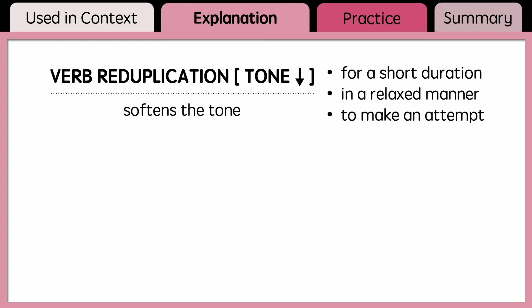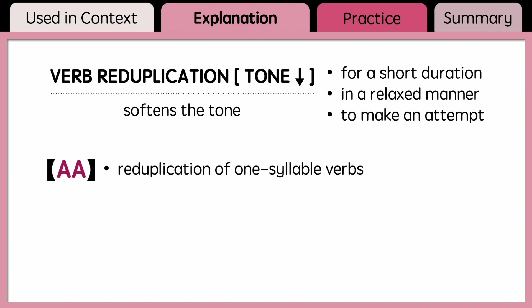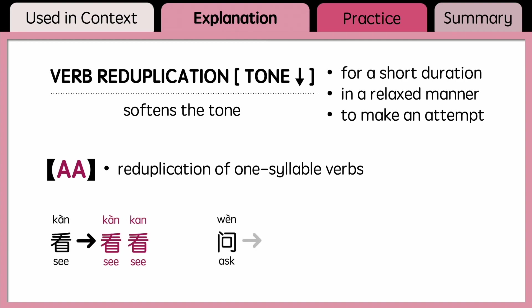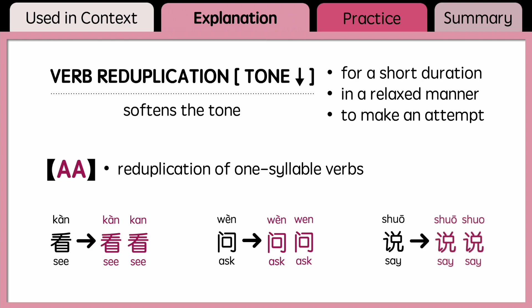When reduplicating one-syllable verbs, you can use either the AA pattern or the A一A pattern. The AA pattern just repeats the one-syllable verb right after the original base verb. For example, 看 becomes 看看, 问 becomes 问问, and 说 becomes 说说.